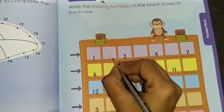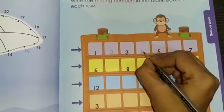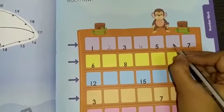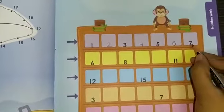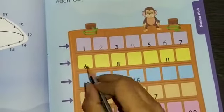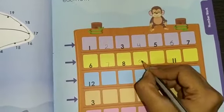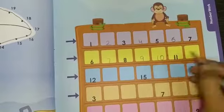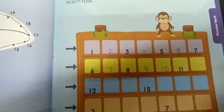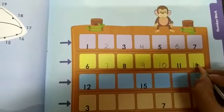1, 2, 3 is already written. After 3 which number will come? 4, 5, 6, 7. Now here the number is written 6. Now after 6 which number will come? 7, 8, 9, 10, 11 and then you have to write 12.